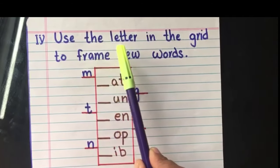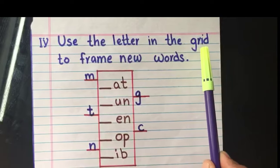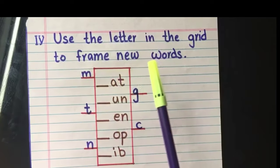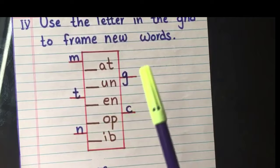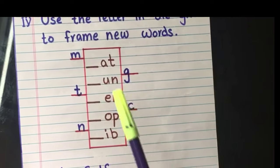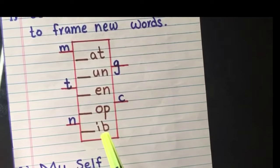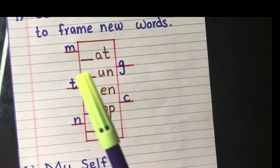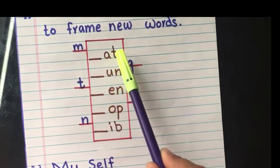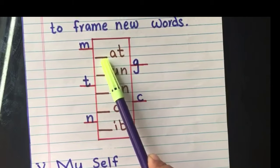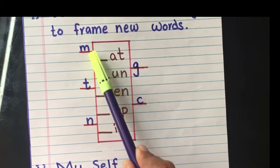The fourth question is, use the letter in the grid to frame new words. I hope you can see the letters in the grid. This side and the other side. And in middle, I have given dash at. The child should find out the correct letter from the grid and he should fill it up.